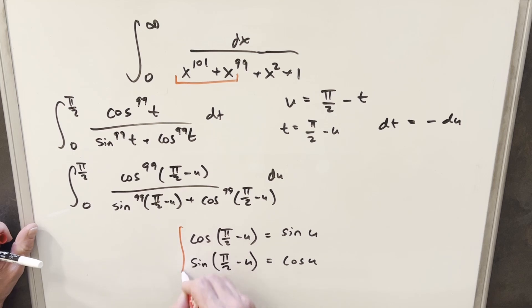Now, from here, what I can do is use my complementary angle formulas for sine and cosine. And this is going to allow us to transform everything here. What it's going to do is it's going to flip cosine pi over 2 minus u to sine. And it's going to flip sine to cosine.